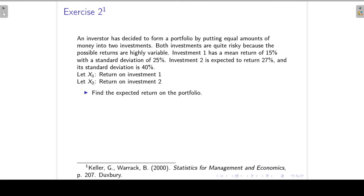Now let's look at the second exercise. An investor has decided to form a portfolio by putting equal amounts of money into two investments. Both are quite risky because the possible returns are highly variable. Investment 1 has a mean return of 15% with a standard deviation of 25%. Investment 2 is expected to return 27% with a standard deviation of 40%. Defining X1 and X2 as the returns, the portfolio return R equals 0.5·X1 plus 0.5·X2.